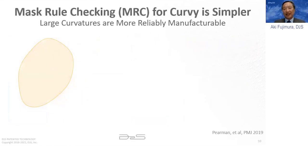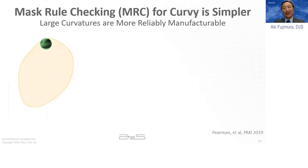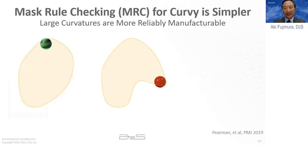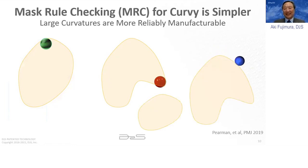Speaking of mask rule checking: the mask rules themselves are also simpler in the curvilinear context. We think of it as rolling a ball inside or outside of the contour. If you take a certain diameter ball and roll it inside the shape, and it clears all the way without sticking out, then it's MRC clean — like the left-side picture. The middle picture ran into something, so that's why it's red — there's a problem. This is a conceptual description of what the MRC algorithm aims to achieve.